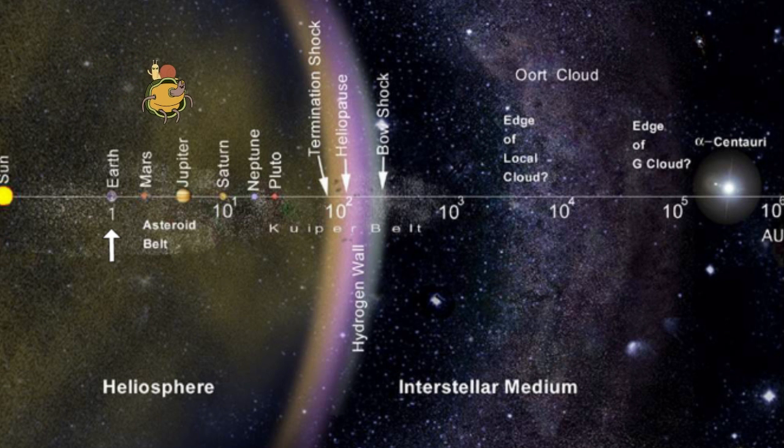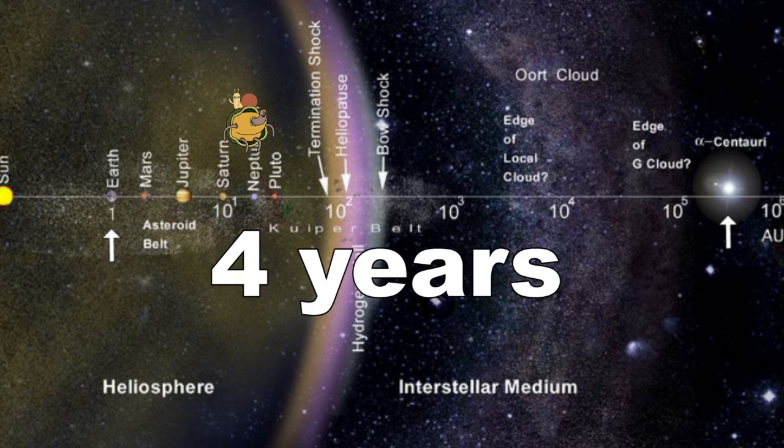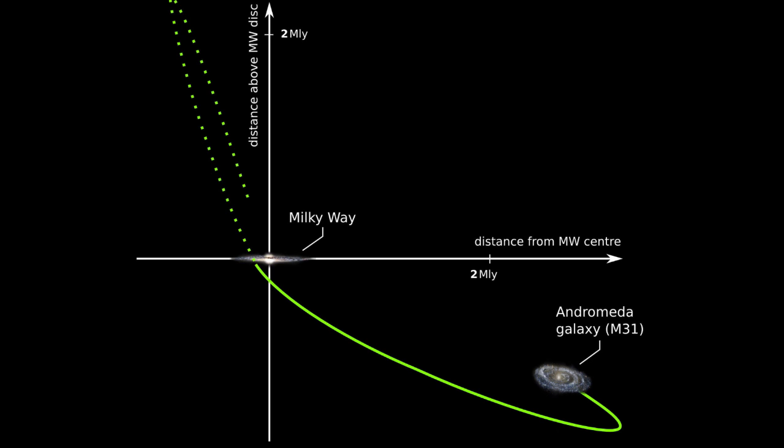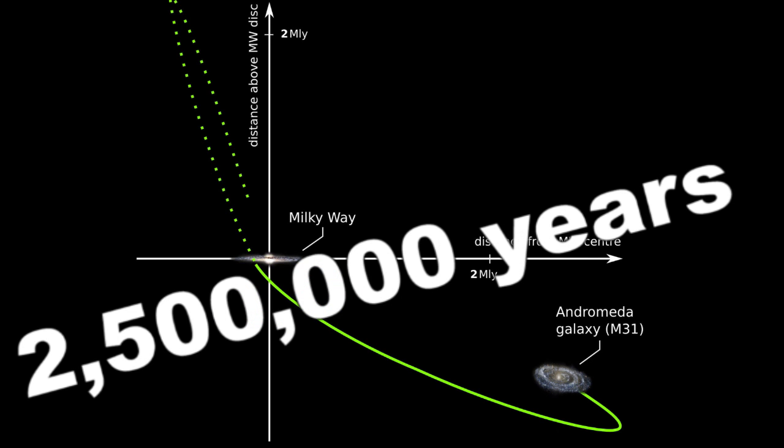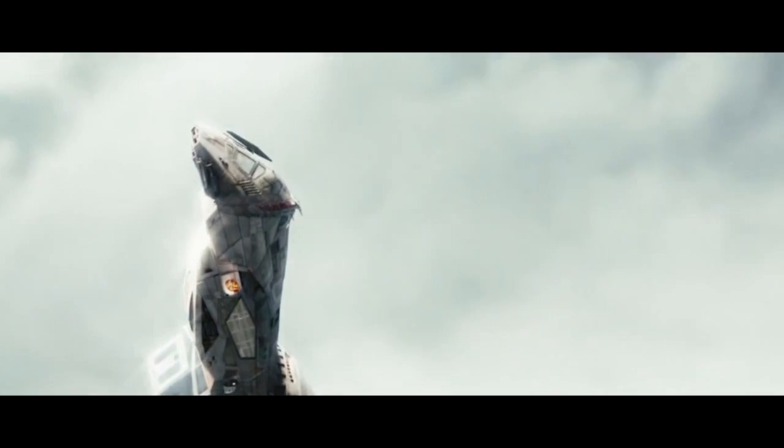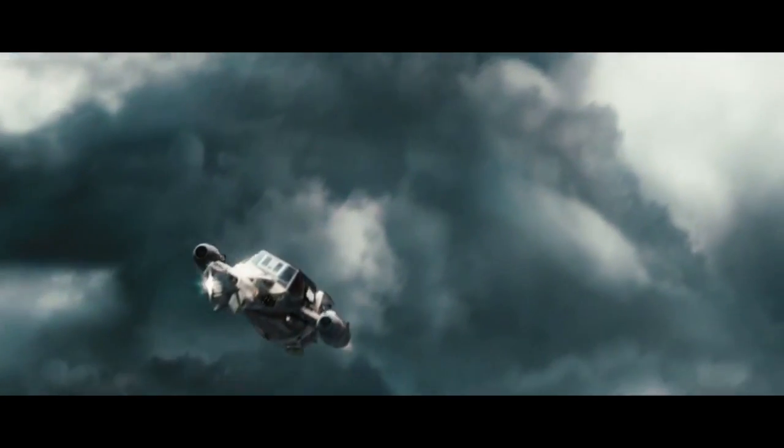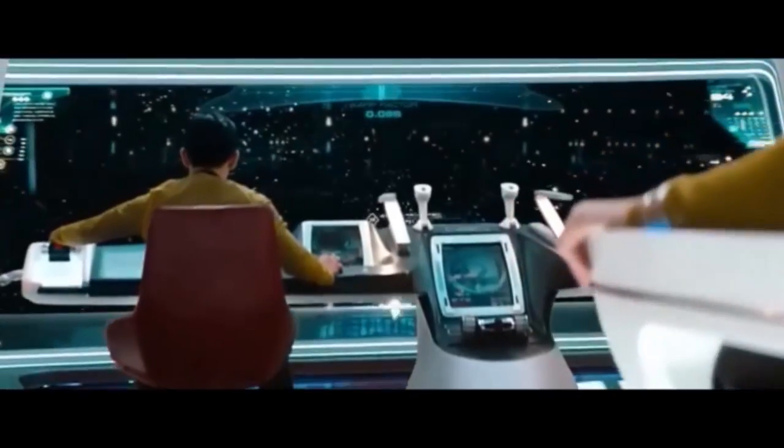While that seems fast, a trip to our closest neighbor star, Proxima Centauri, would take you about four years. And the trip to the Andromeda galaxy would take you two and a half million years. So in order for us to travel from galaxy to galaxy in the same time frame in which we travel from state to state or country to country would take technology far beyond what we have today.